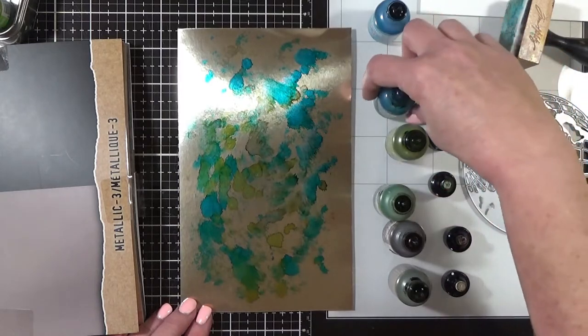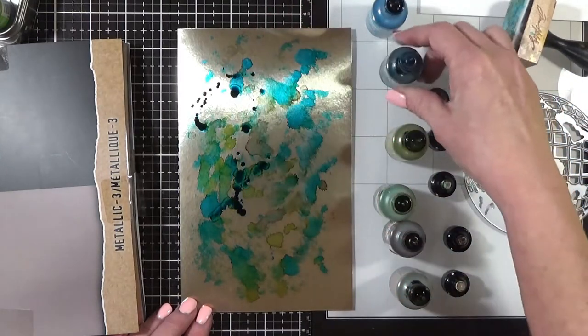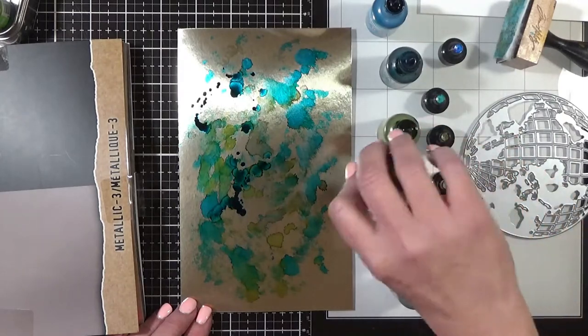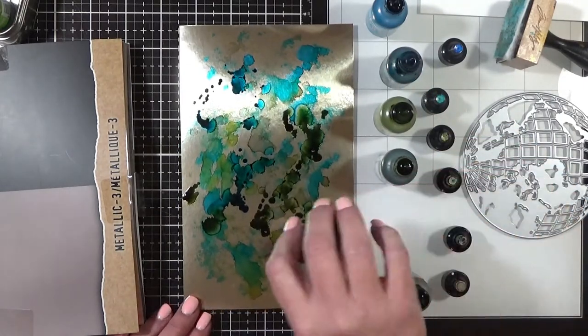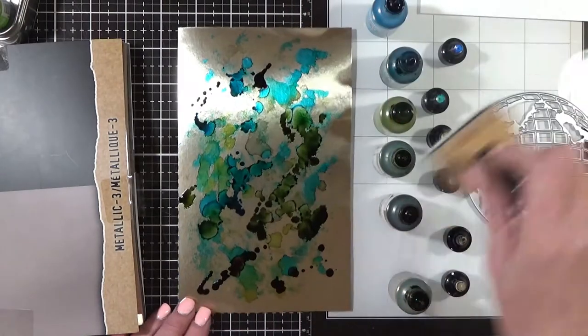And then let's see, I've got the darker colors. So here's stream, pesto, and teakwood. Same thing.